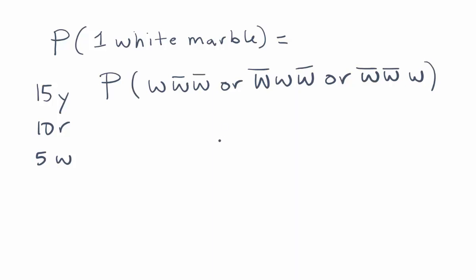Since we have the word OR here, we're going to add the results. So in each case, we have three fractions, and we'll be multiplying these because when we're taking three items, we're dealing with the multiplication rule of probability.